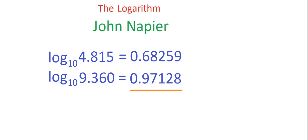Let's suppose that we want to know what 4.815 divided by 9.360 equals. That's an even harder problem—we'd have to do that by long division. But if you did, you would get the answer 0.51442, which is about right.